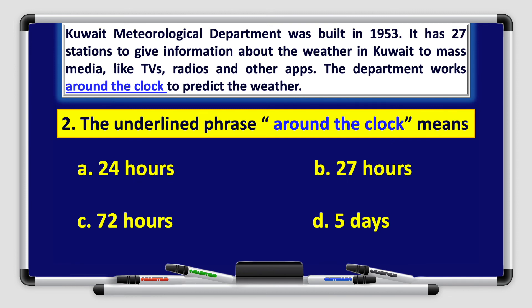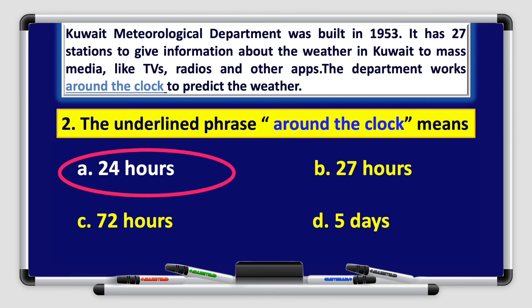The underlined phrase 'around the clock' means: A. 24 hours, B. 27 hours, C. 72 hours, or D. 5 days. The department works around the clock to predict the weather. Excellent — 24 hours.